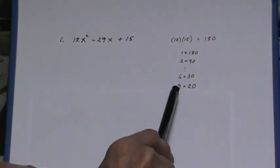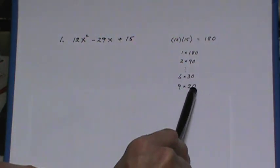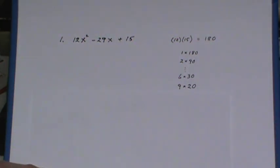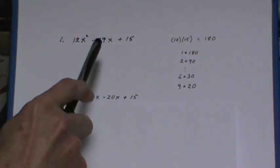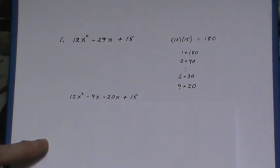Still didn't work. 7 doesn't go in, 8 doesn't go in, and finally 9 times 20. 9 and 20 add up to 29. So those are the numbers that I used to decompose the 29 into minus 9x and minus 20x.